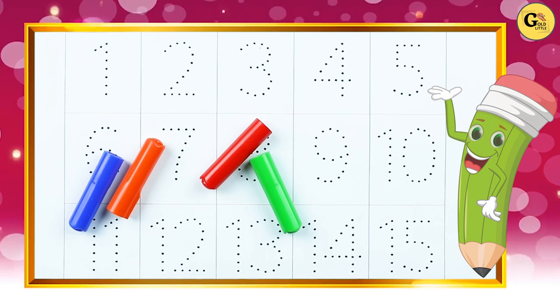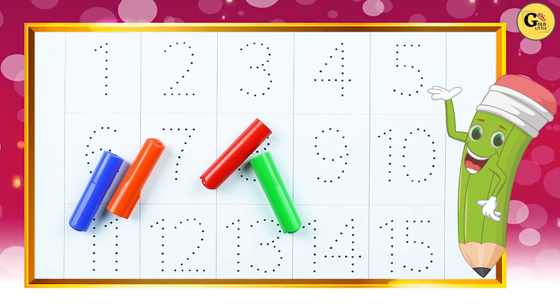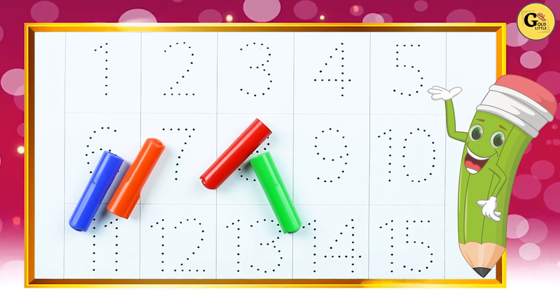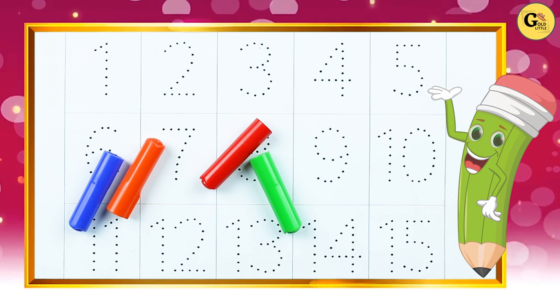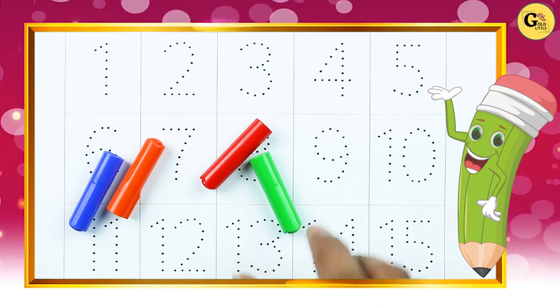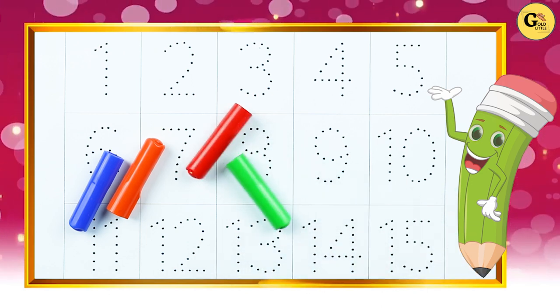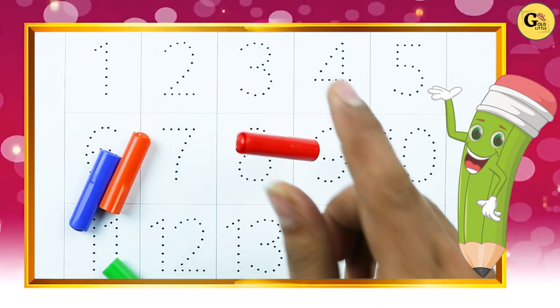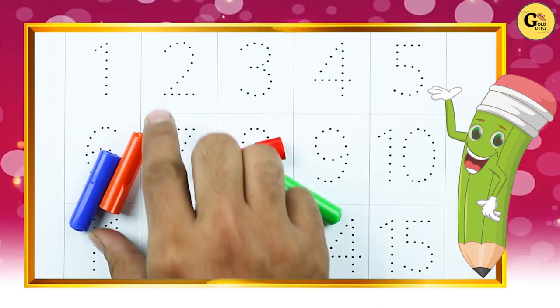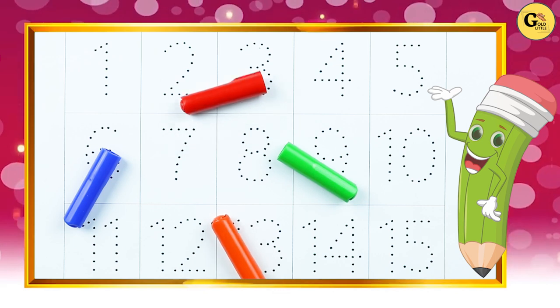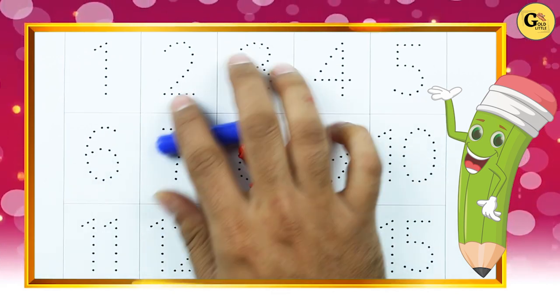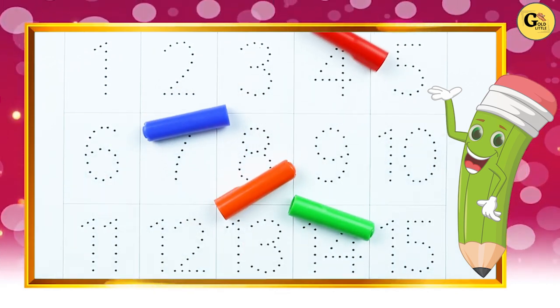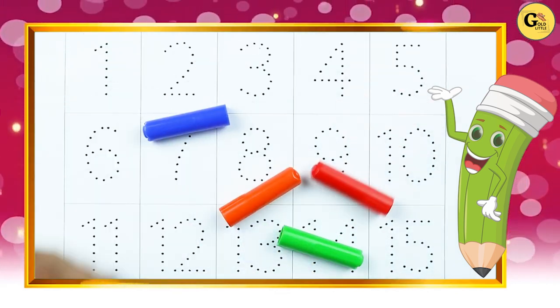Hello friends, today we will learn numbers 1 to 15 with some colors: green color, red color, orange color, blue color. Let's start.